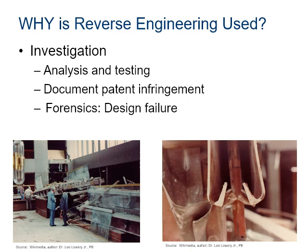The fourth reason we might reverse engineer is investigation or forensics. A product can be reverse engineered for analysis and testing. If a competitor releases a product that appears to include patented work, reverse engineering can be used to verify patent infringement. If a design fails, reverse engineering is often performed to investigate the as-built conditions and identify the mode of failure. The images shown are the aftermath of the Hyatt Regency walkway collapse in Kansas City in 1981, which killed 114 people and injured more than 200. Investigation revealed the contractor had installed the walkway using a hanger design other than the original engineered design, and reverse engineering showed the alternate design did not meet building codes and was structurally inadequate.